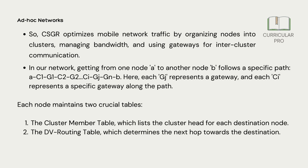In our network, getting from one node A to another node B follows a specific path: AC1G1C2G2, CGJGNB. Here, each GJ represents a gateway, and each C represents a specific cluster head along the path.